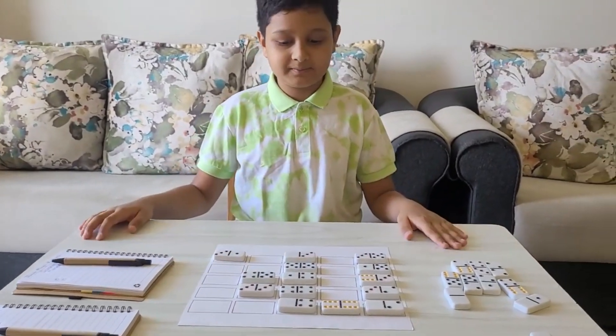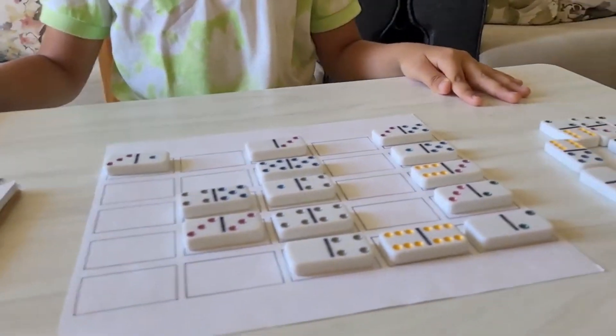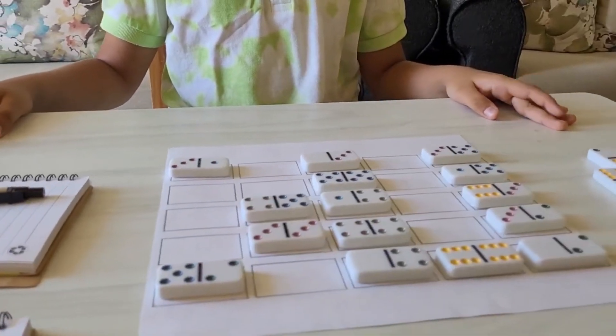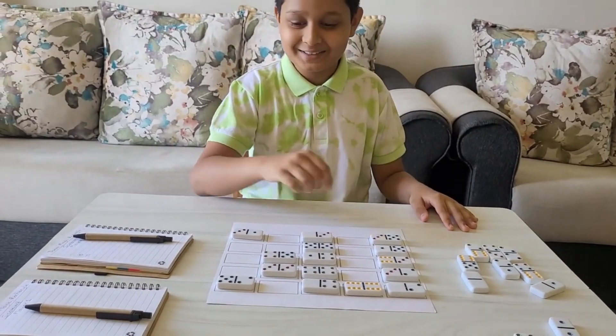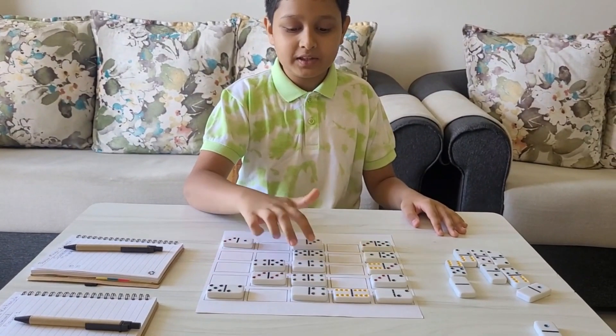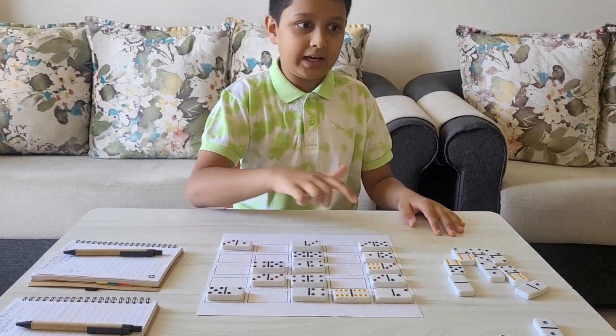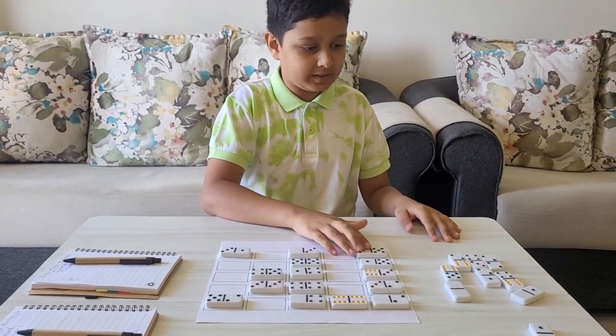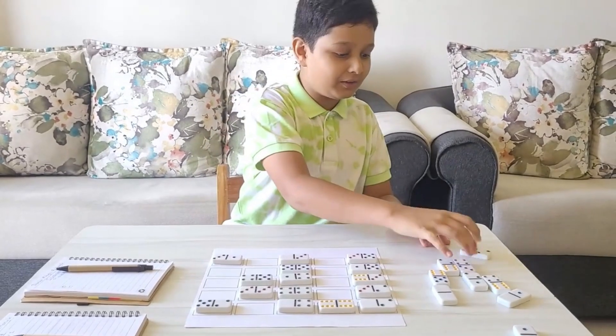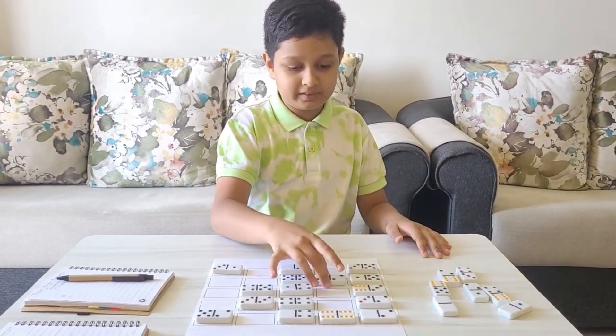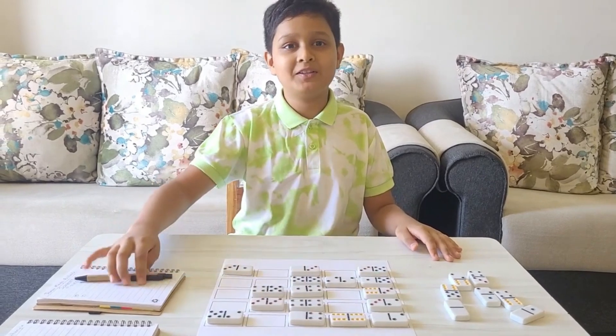Your turn, player 1. Now I can look at this diagonal. 7 plus 6 is 13, 13 plus 5 is 18, 18 plus 8 is 26. So now I can place a 4 block over here and get 20 points for this diagonal.